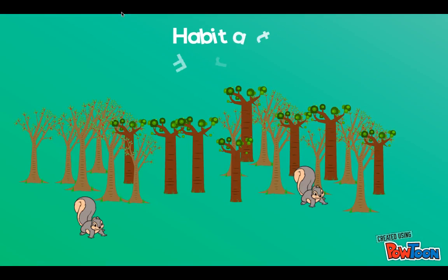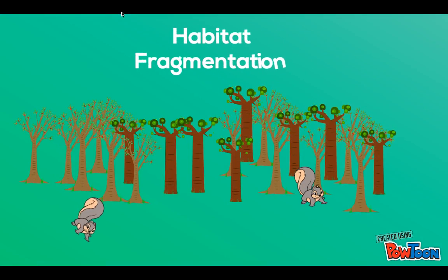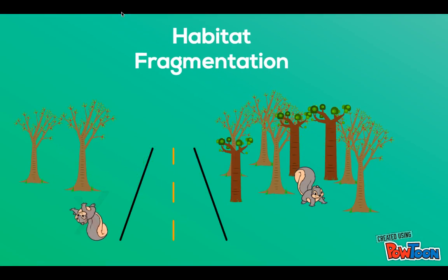All animals need a habitat to survive. Unfortunately, without a habitat, animals cannot survive. Habitat fragmentation is when animals' habitats are not necessarily destroyed, but are broken into smaller pieces by roads or highways. There has to be a better way for humans to coexist with animals.